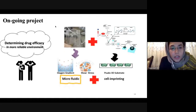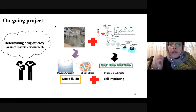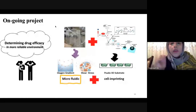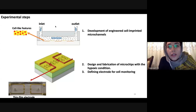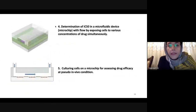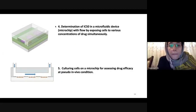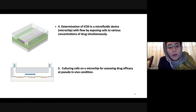We are now planning a new project to combine cell imprinting methods with microfluidics to determine drug efficacy in a more reliable environment. To achieve this goal, we plan to follow several steps: first, develop engineered cell-imprinted microchannels; then design and fabricate a microchip with hypoxic conditions and electrodes for cell monitoring; then check the IC50 in a more reliable environment; and finally culture cells on the microchip to assess drug efficacy. Thank you very much.